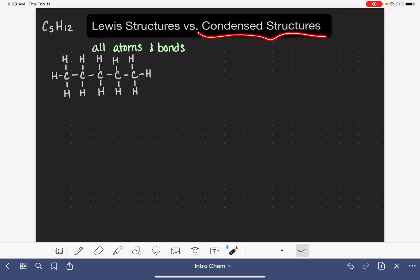A condensed structure is just an abbreviated or shortened version of a Lewis structure. It still shows all of the atoms in the molecule, but instead of drawing out all of the bonds, we just kind of condense or jam some of the bonds together. So this is going to show all of the atoms and it's going to show some or maybe none of the bonds.